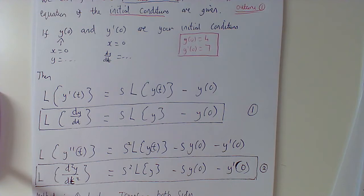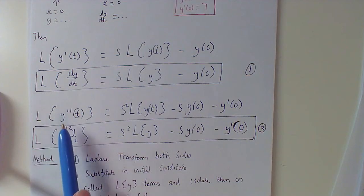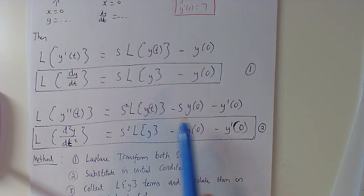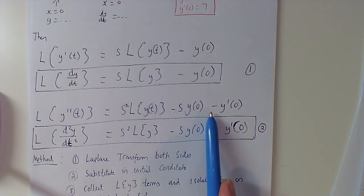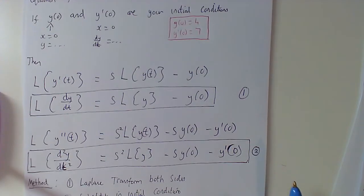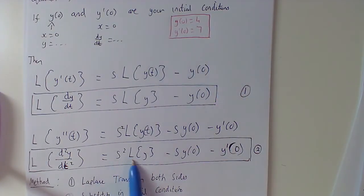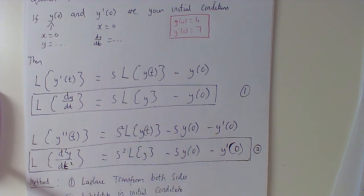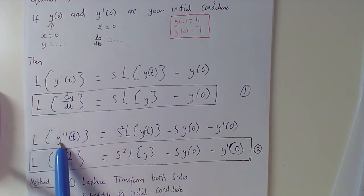That helps us whenever we see dy/dt, but in a second-order differential equation we'll get d²y/dt² as well. The Laplace transform of y'' is s² times L{y}, take away s times y(0), take away y'(0). So if we were using these initial conditions, it would be s²L{y}, take away 4s, take away 7.